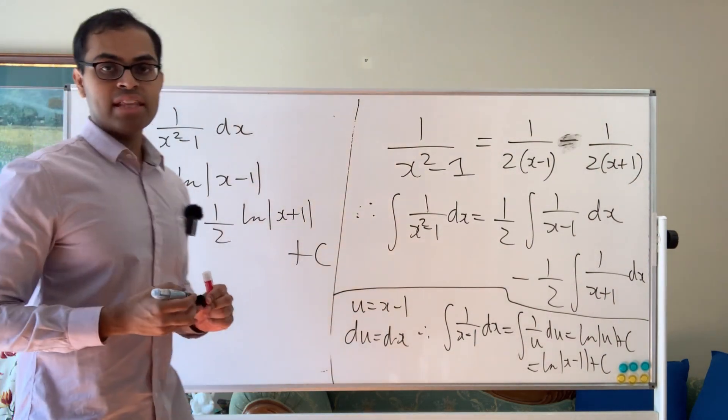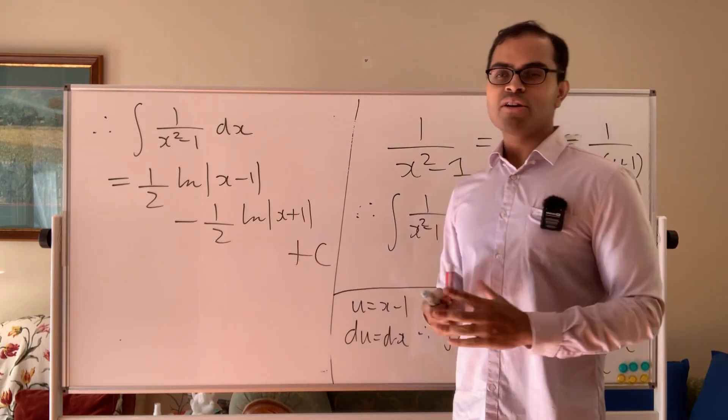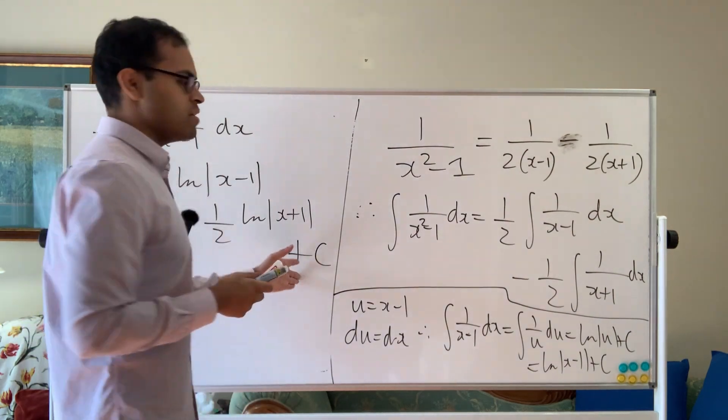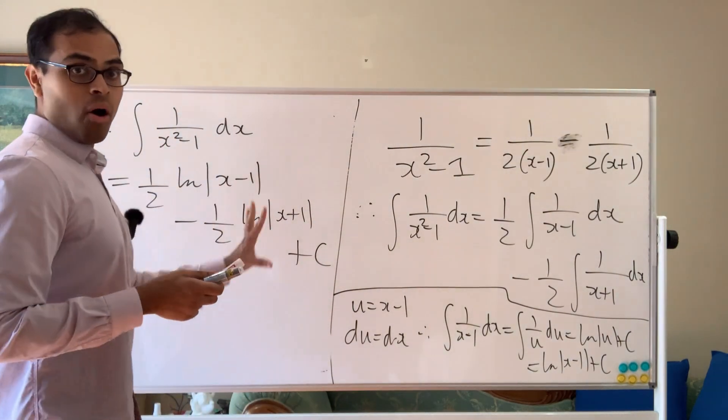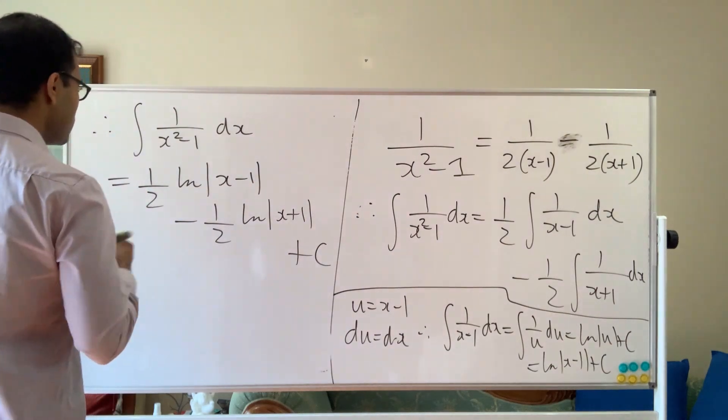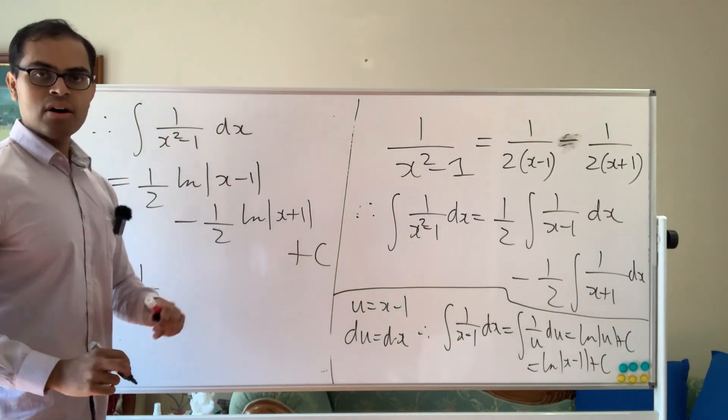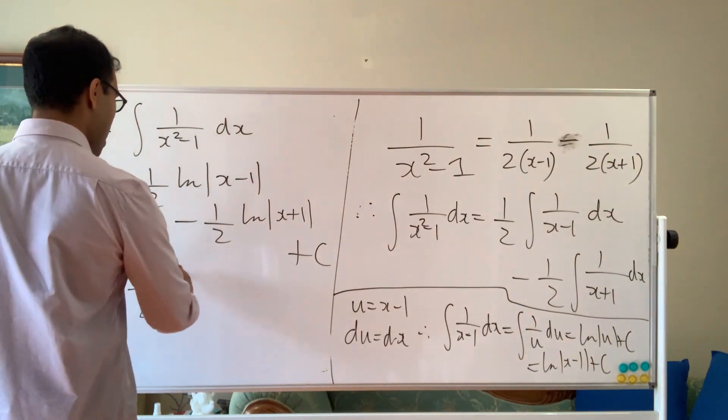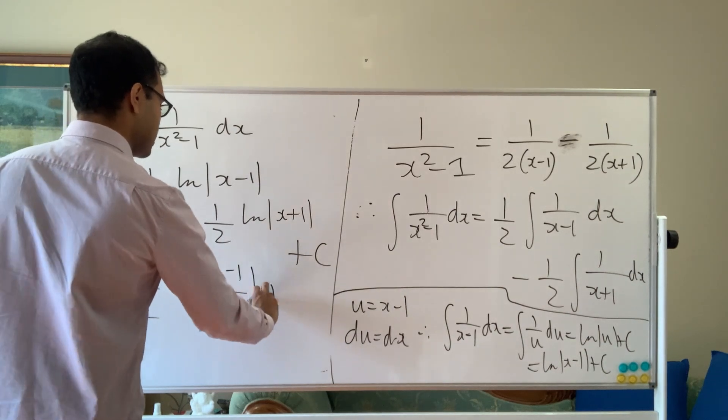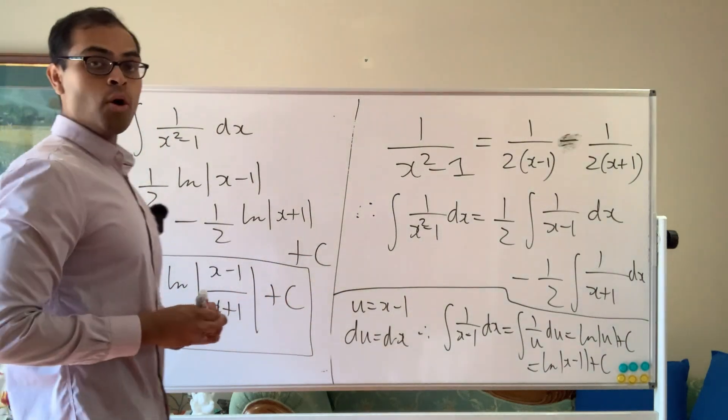So always, don't forget the plus C, this is really important, especially in homework assignments, test exams, in high school and college math. People like to take off points for this. It is important because the derivative of a constant is 0, so this is all the answers. But when you're taking a definite integral, you don't have to worry about the plus C. So here, we can leave it like this, or we can use log laws. So log laws would give us the difference of logs is log of the ratio. So we get half times the log of the absolute value of x minus 1 by x plus 1 plus a constant. And that's going to be the final answer using the partial fraction decomposition.